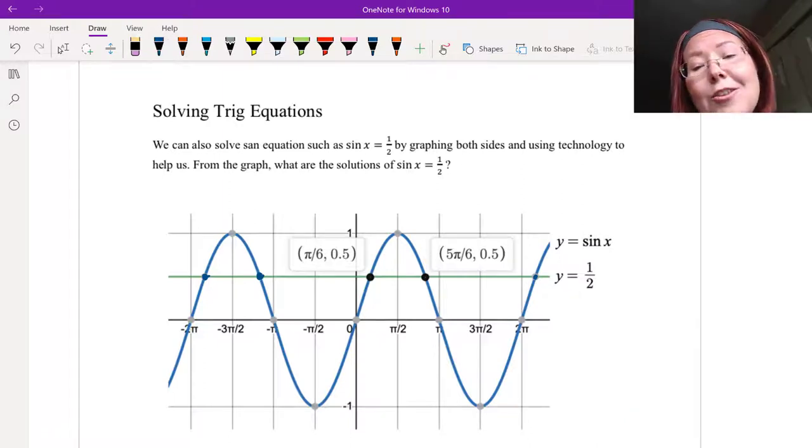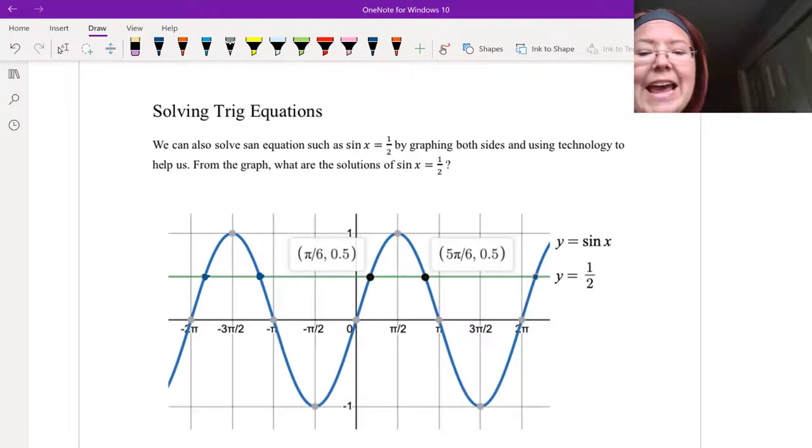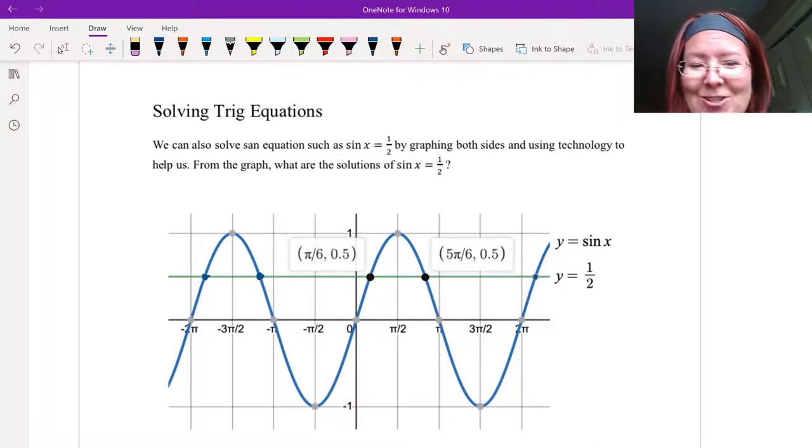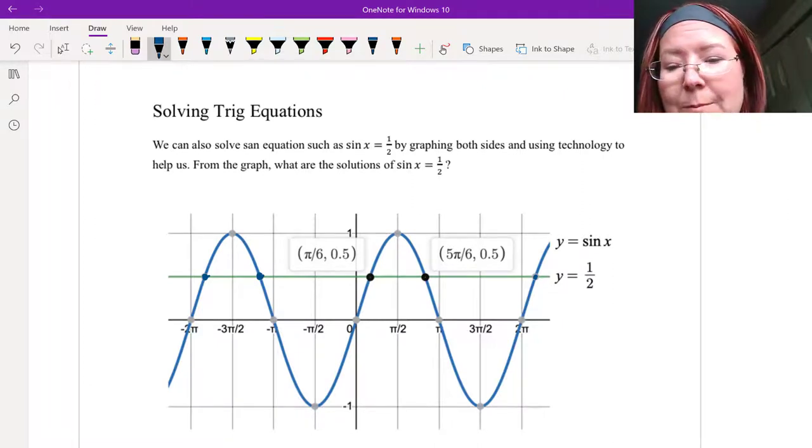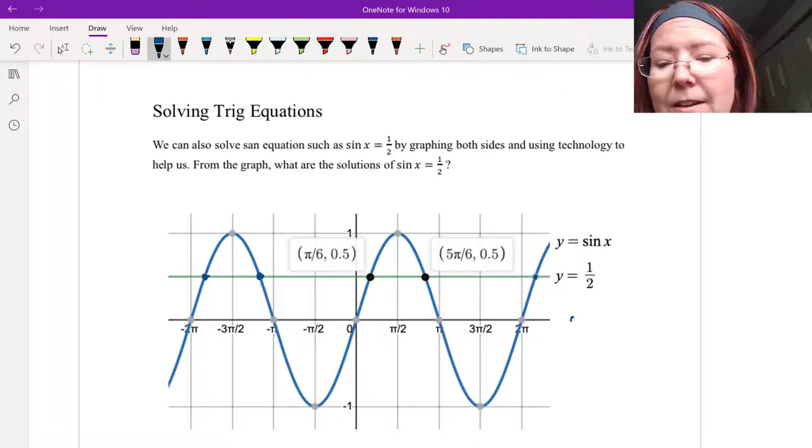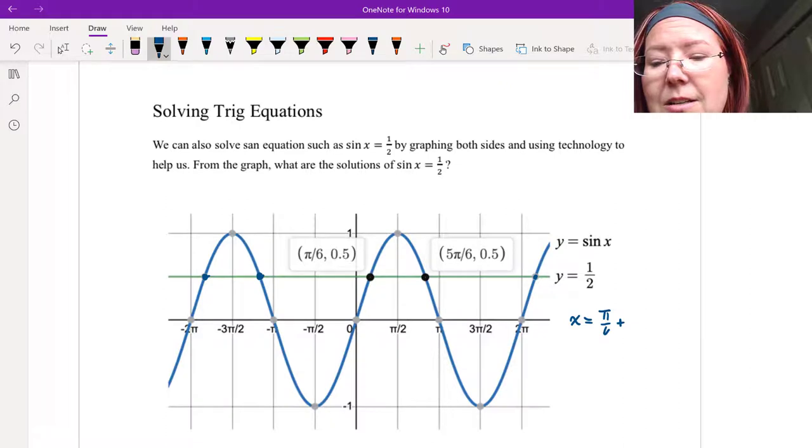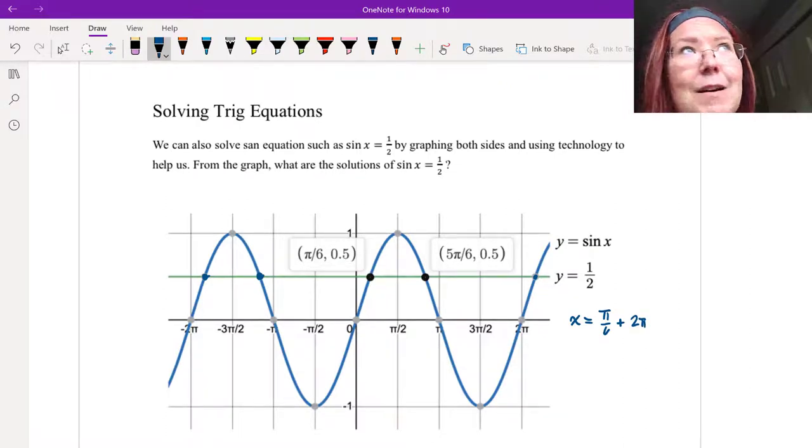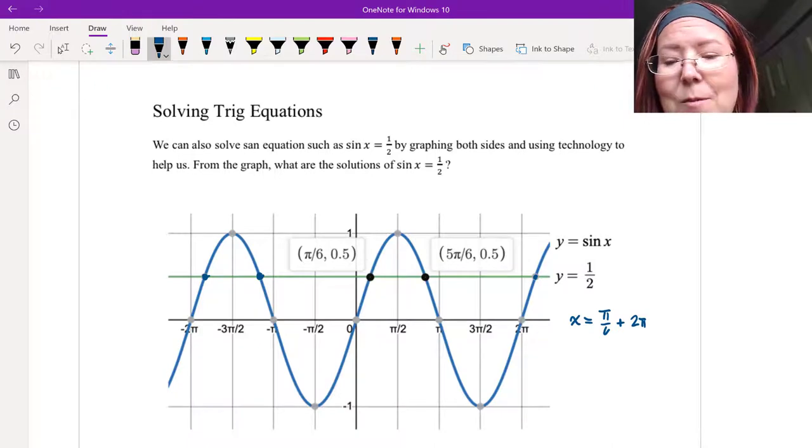Now we could write all the solutions by taking one solution that we see and adding 2 pi to that solution because the period of sine is 2 pi. So for example, we could take that first solution at pi over 6 comma 0.5 and say we should have another solution at pi over 6 plus 2 pi, but then plus 4 pi, plus 6 pi, plus 8 pi.